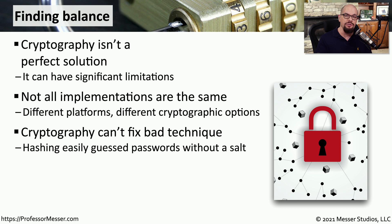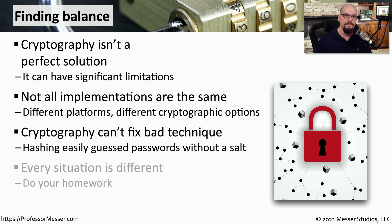For example, you may use hashing to store passwords. But if you don't apply a random salt to that password hash, then you may not be storing things as securely as you could be. If you're in charge of implementing some type of cryptography on your network, your firewalls, or your VPNs, make sure you do your homework and that you're implementing the correct type of cryptography for your purposes.